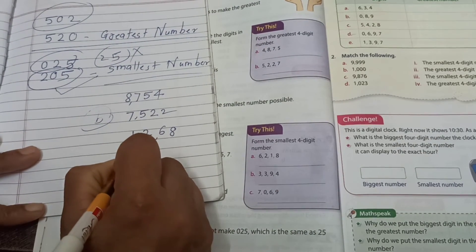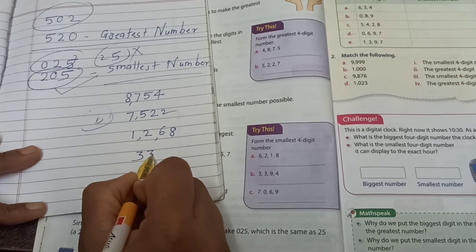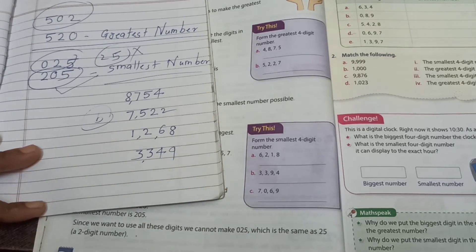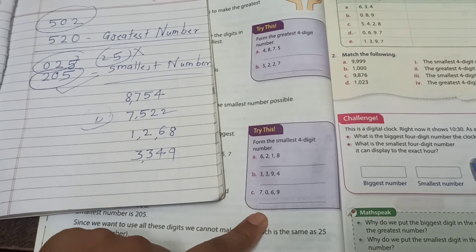Means three thousand, three hundred, forty-nine. This one smallest number we got.